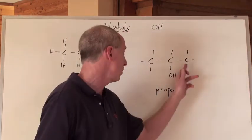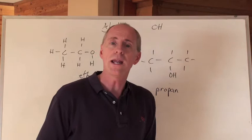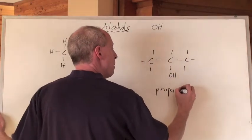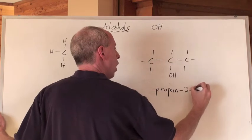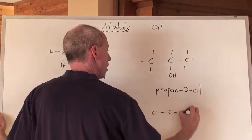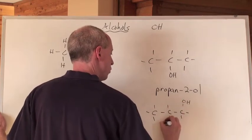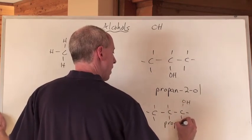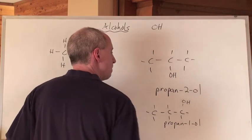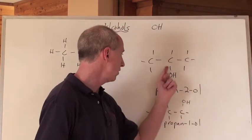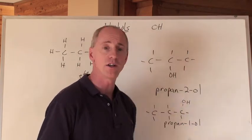Yep, or the first carbon there. So wait a minute, what are we going to call it? This one is going to be propan-2-ol. This one right here that I'm drawing, where we put the OH on the first carbon, would be propan-1-ol. Those two are isomers of each other, but because the OL is at different positions, they have different names.